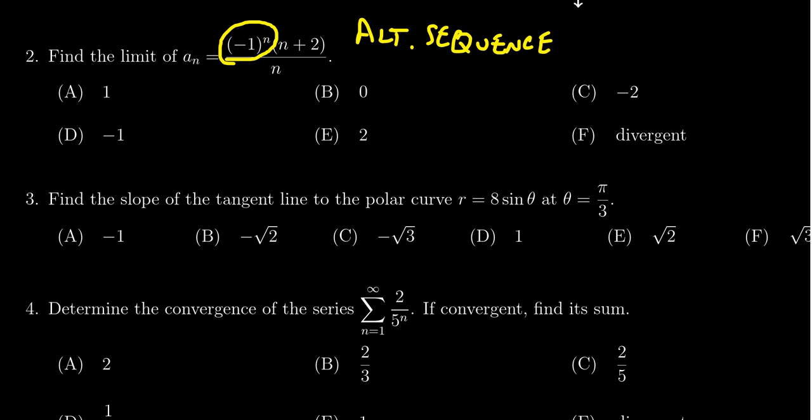The sequence will alternate back and forth between positive and negative. If you ignore the (-1)^n for a moment, notice this is going to go off towards (n+2)/n. Since it's a balanced ratio, this is going to go off towards their coefficients, which is just one.